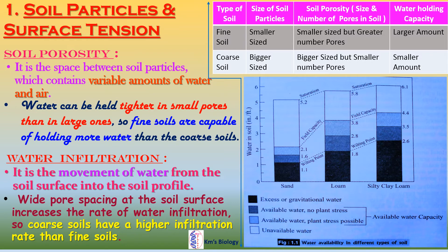The fourth important parameter is water infiltration — it is the movement of water from the soil surface into the soil profile. Wide pore spacing at the soil surface increases the rate of water infiltration, so coarse soils have a higher infiltration rate than fine soils. Here is a diagram showing a graphical relationship of available water capacity and unavailable water capacity in soil, representing water availability in different types of soil.